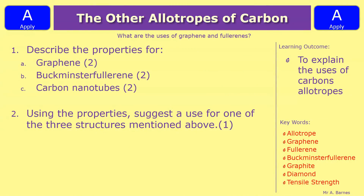That's about everything you need to know, so let's move on to a couple of questions. Question one: describe the properties of graphene, Buckminster fullerene, and carbon nanotubes — each worth two marks. Question two: using the properties, suggest a single use for one of the three structures mentioned above. It could be what we've mentioned in the video or something else, as long as the properties match up you're more likely to get the mark. Pause the video and we'll see how you've done in a minute.